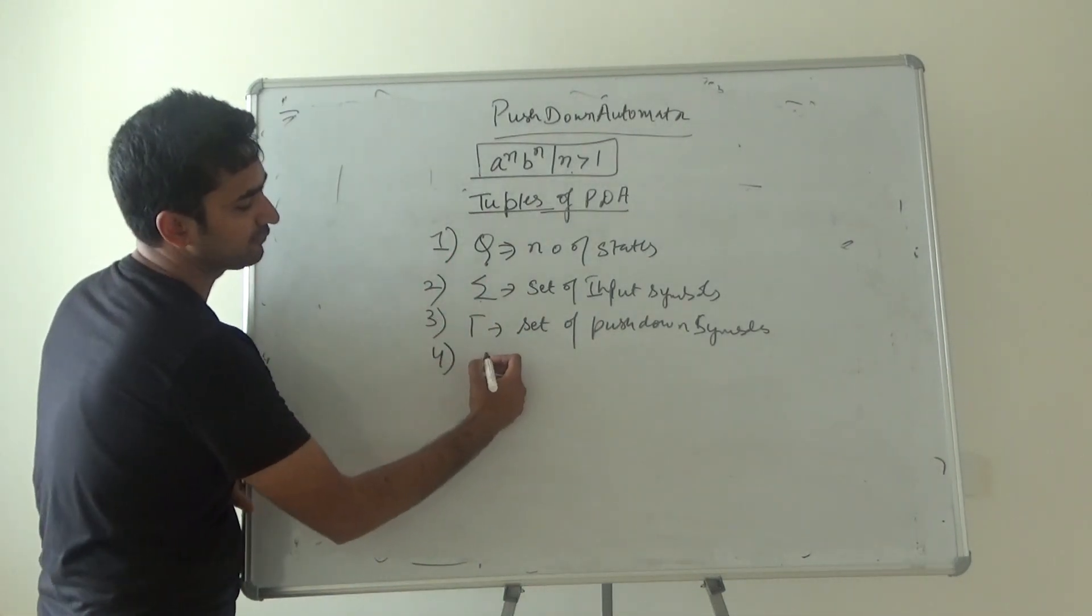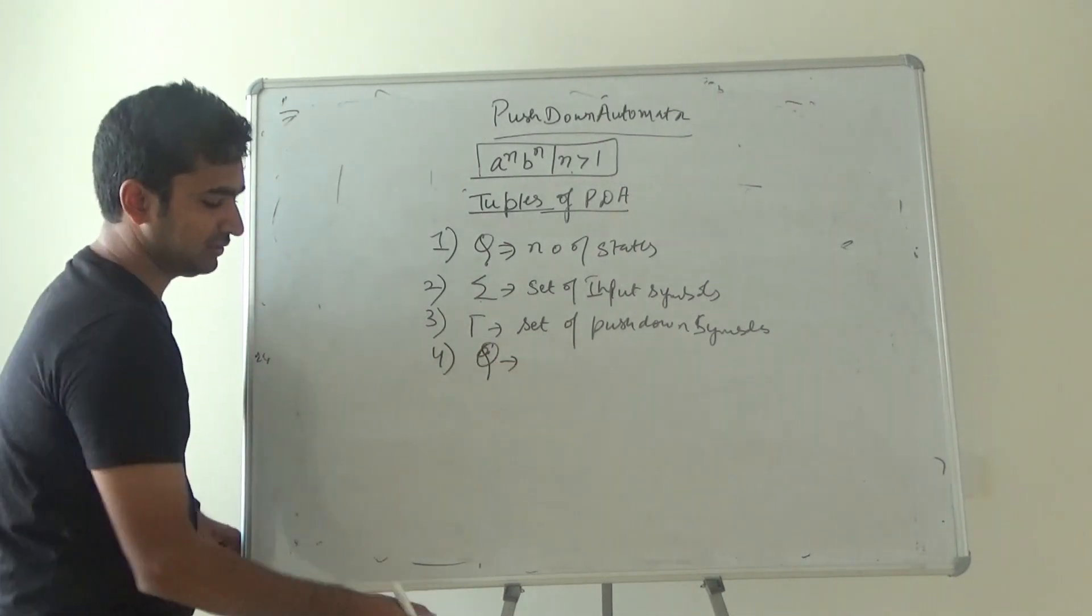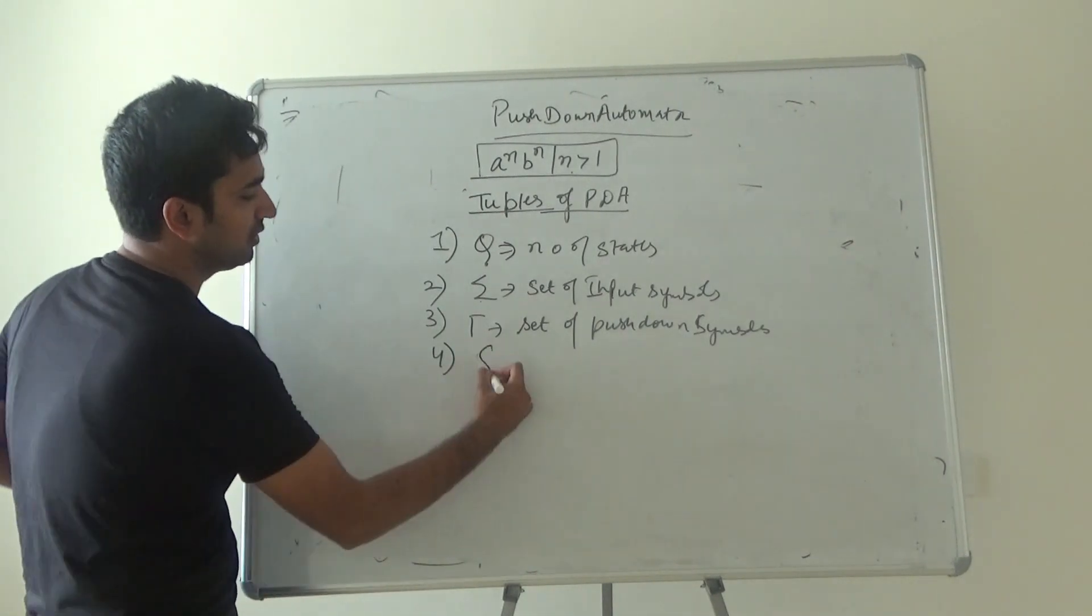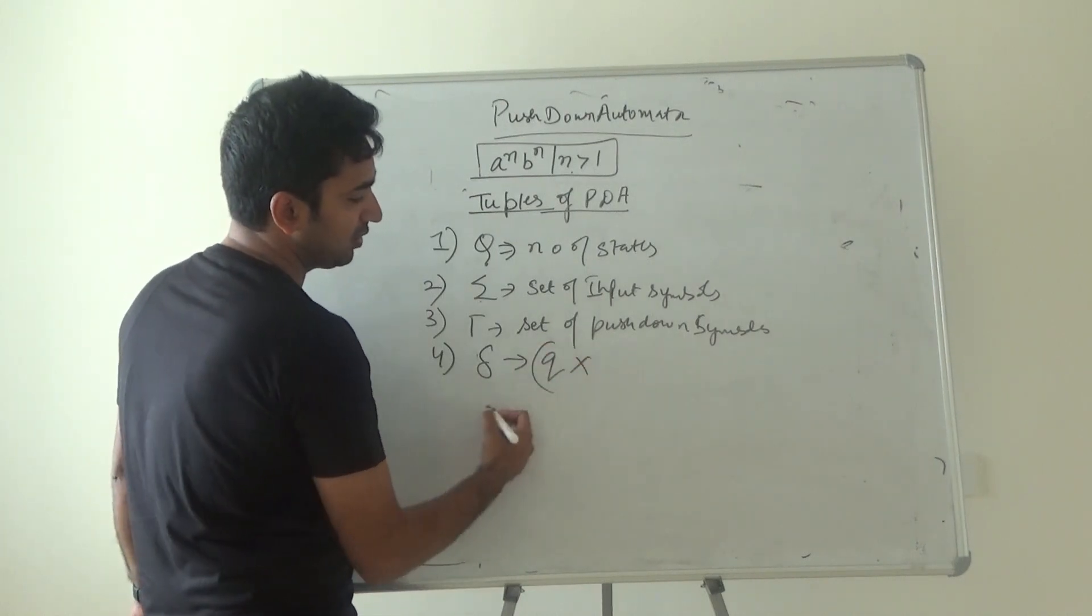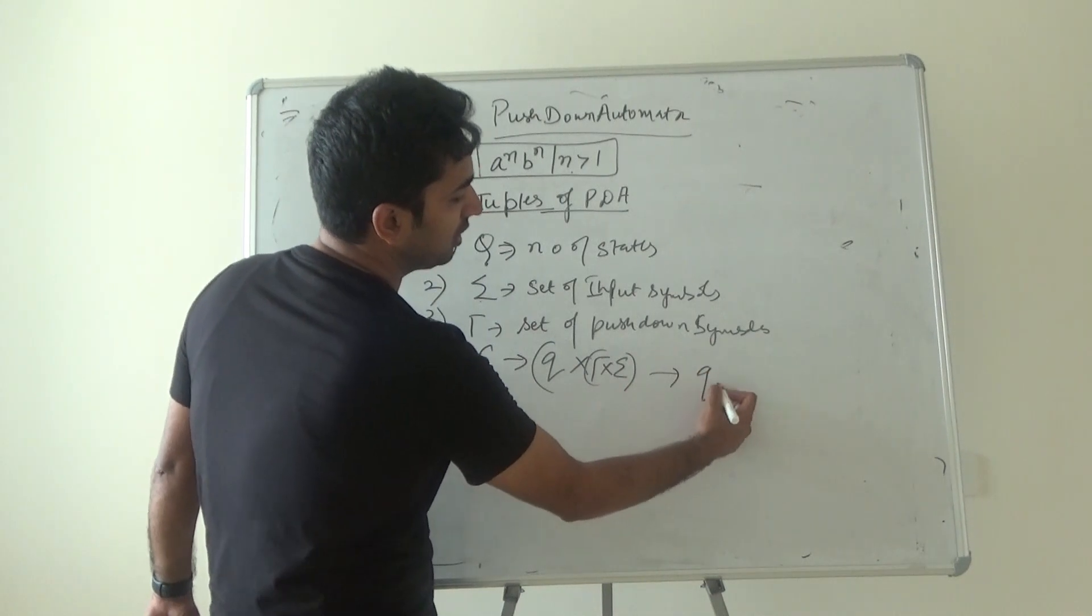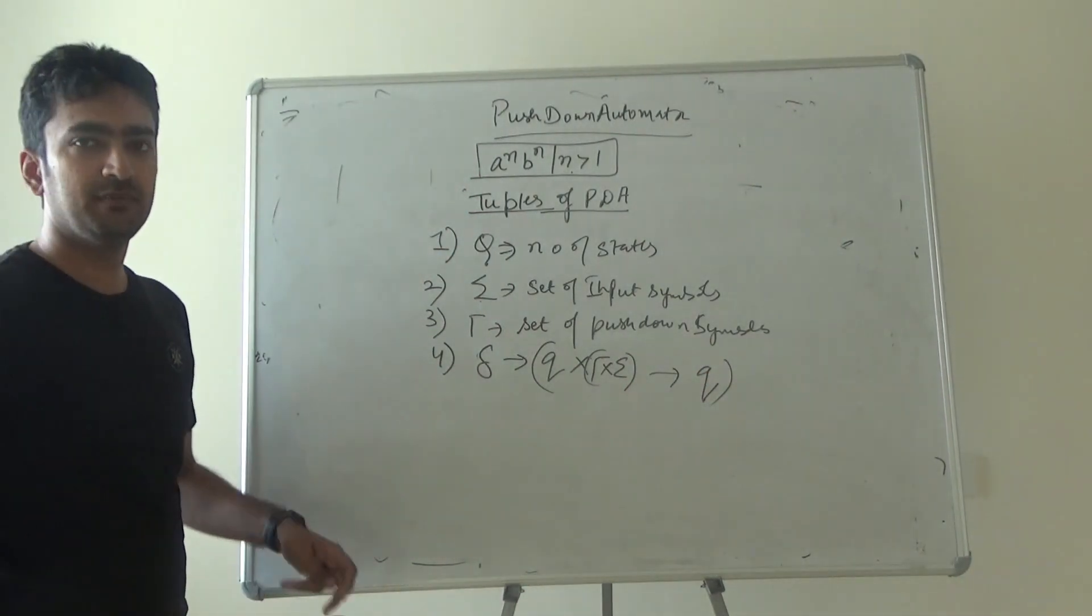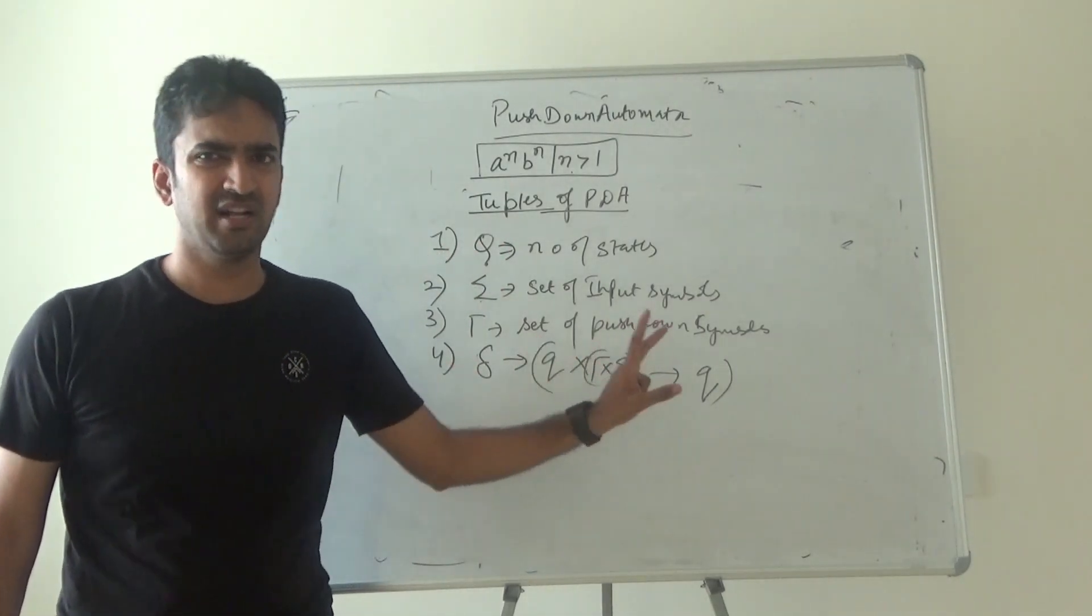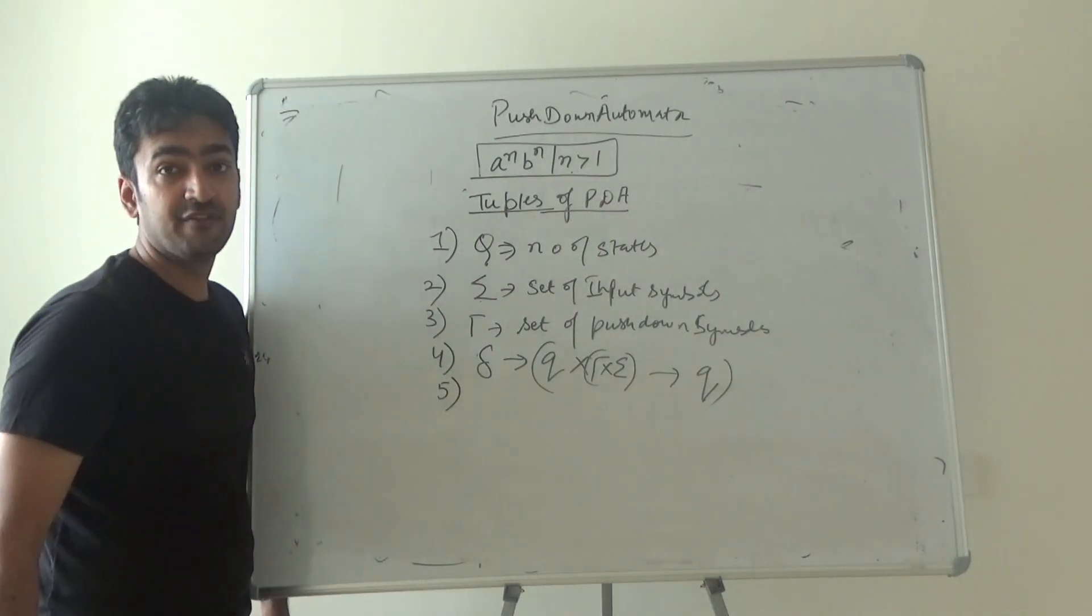Then we have obviously a transition system. Let me just represent the transition system. So obviously a state will get all the input symbols and it will produce a particular output. So the transition system always represents any state given an input symbol, it produces output. That's what transition system represents, similar operation to the DFA.